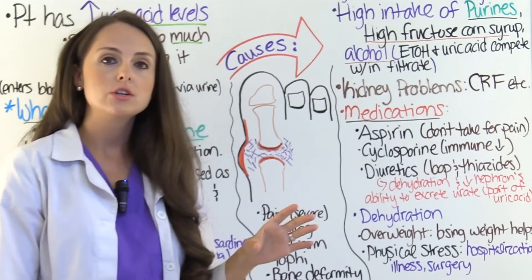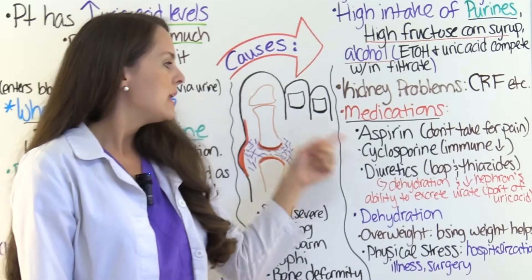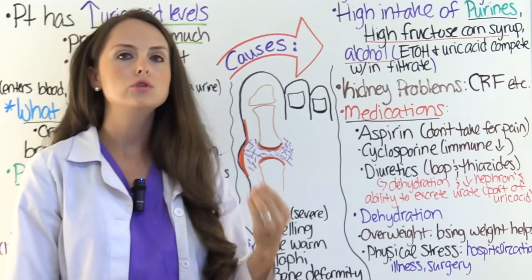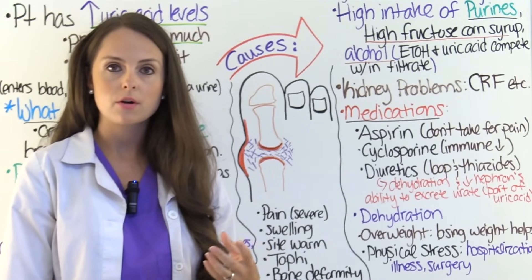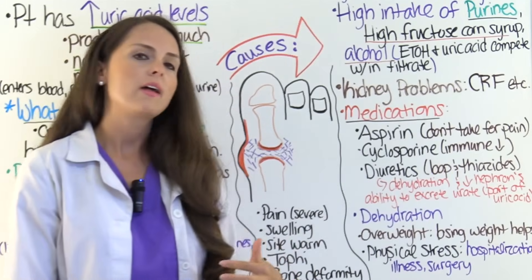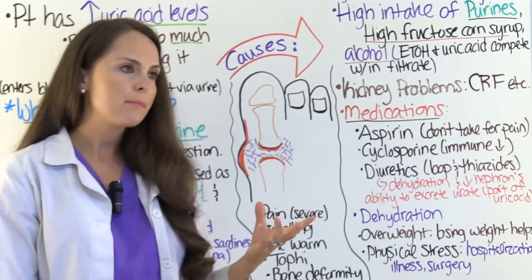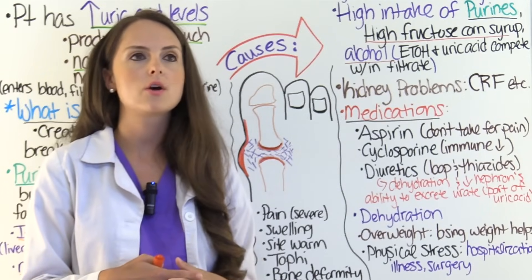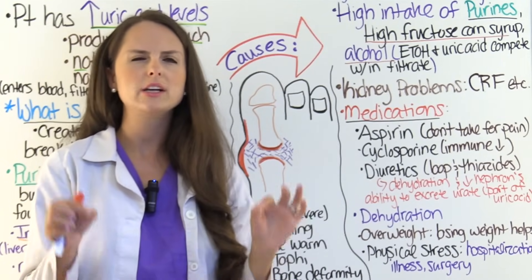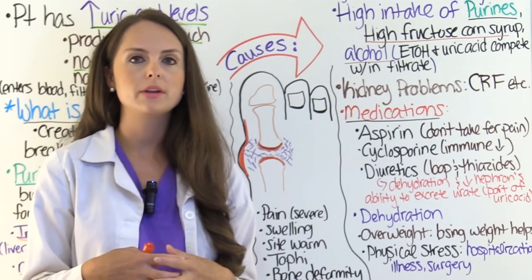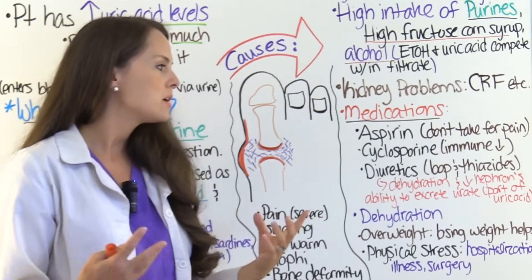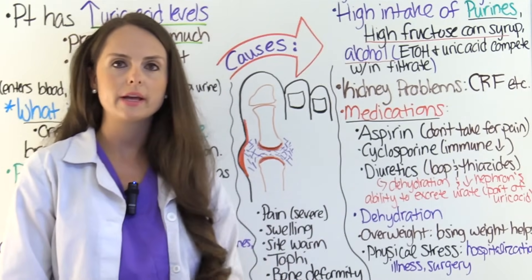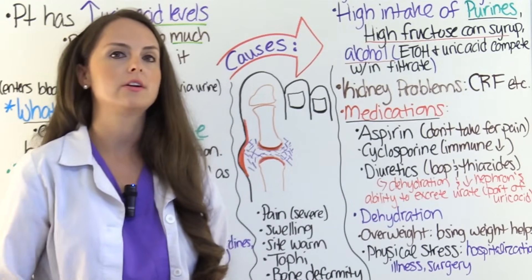Another medication is cyclosporine, which is an immune suppressor. Also diuretics like loop and thiazide diuretics — loop diuretics include furosemide, also called Lasix, and thiazide is like hydrochlorothiazide, HCTZ. When a patient takes diuretics, they urinate a lot and are at risk for dehydration. When a patient becomes dehydrated, their urine gets really concentrated, which creates great conditions for uric acid to build up. Also, these diuretics decrease the nephron's ability to excrete urate, which is part of uric acid, leading to elevated uric acid levels.